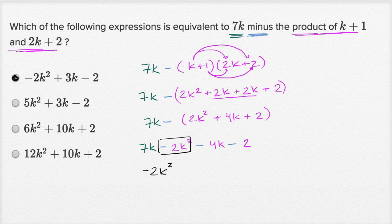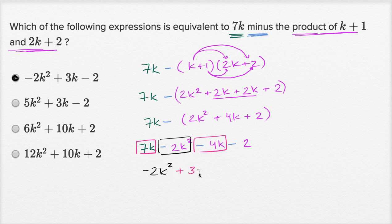So it's negative 2k squared, and then we could add 7k and negative 4k. Those two are going to add to give us 3k. So it's going to be plus 3k, which is what we see right over there. And then finally, you have this minus 2, which is exactly what we see in this first choice up here.